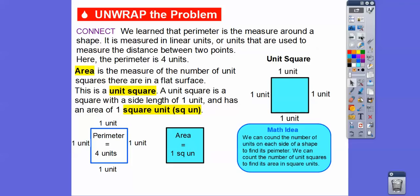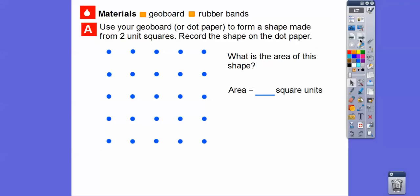We can count the number of units on each side of the shape to find its perimeter — just add up the outside pieces. And then to find the area, we just count the number of squares on the inside. Let's try some of these.